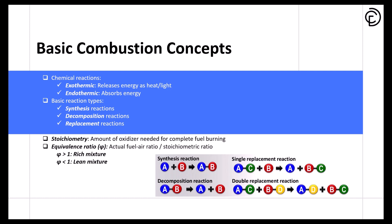Here's a really important concept: stoichiometry. This tells us exactly how much oxidizer we need for complete fuel burning — think of it as the perfect recipe for combustion. We also use something called the equivalence ratio, shown by the Greek letter phi. This ratio tells us if we're using more or less fuel than the perfect recipe calls for. When phi is greater than 1, we have a rich mixture — too much fuel. When phi is less than 1, we have a lean mixture — not enough fuel. On the right side of the slide, you can see diagrams showing these different reaction types. Notice how in synthesis reactions A and B combine to form AB, while in replacement reactions elements swap positions. These concepts form the building blocks for understanding more complex combustion processes.